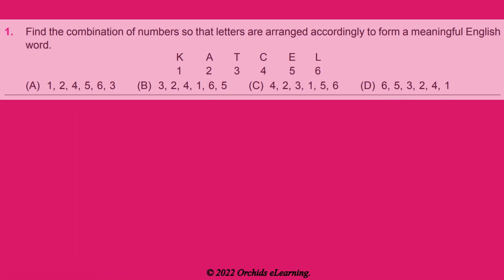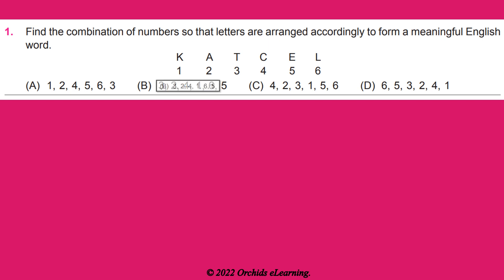Find the combination of numbers so that letters are arranged accordingly to form a meaningful English word. Answer: B — 3, 2, 4, 1, 6, 5 — Tackle.